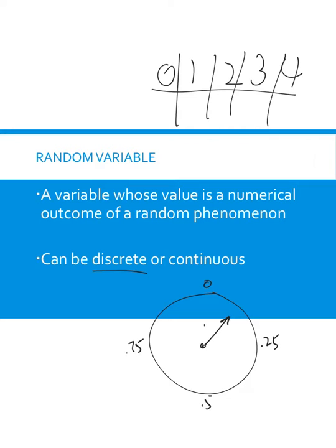It can be discrete - it could be number of successes out of four free throws - or it could be continuous where clearly this one down here is continuous, that there's really an infinite number of values along this spinner.